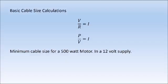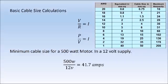Just to put this into practice: we need to calculate the minimum cable size for a 500-watt motor with a 12-volt supply. We're going to use power divided by voltage equals current. So 500 watts divided by 12 volts gives us 41.7 amps — quite a high current draw. Once you've got this information for our circuit, we can then go to our cable chart.